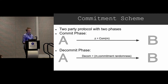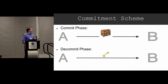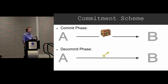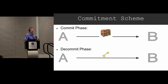It's a two-party, two-phase protocol. Roughly you can think of it as implementing a box with a lock on it. In the commit phase, Alice is going to put her message inside the box, lock it, and send it to Bob. Then in the decommit phase, she sends the key.